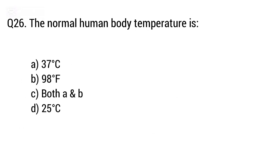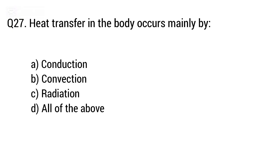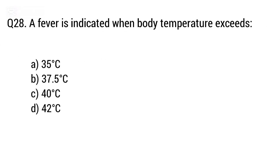Question 26: The normal human body temperature is? The right answer is option C — both A and B. Question 27: Heat transfer in the body occurs mainly by conduction, convection, or radiation. The right answer is option D — all of the above. Question 28: A fever is indicated when body temperature exceeds? The right answer is option B — 37.5 degrees Celsius.